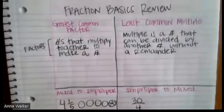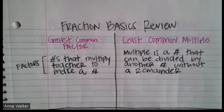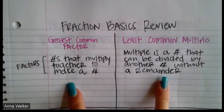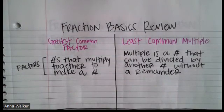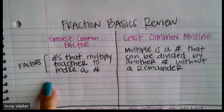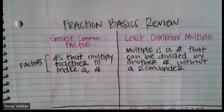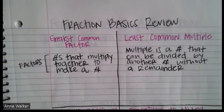The first thing we are going to talk about is the greatest common factor and the least common multiple. The greatest common factor involves numbers that multiply together to make a number — those are called factors. For example, six times two is 12, so six and two are factors of 12.